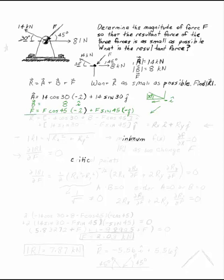To find the resultant of these three forces, all we have to do is add up the i components and add up the j components. Once we've done that, let's call this Rx in the i direction plus Ry in the j direction for simplicity. Think about this for a second — what are you looking for? You want to know how to make the resultant force as small as possible.